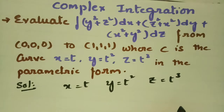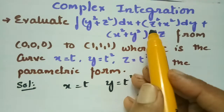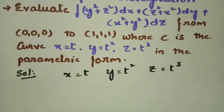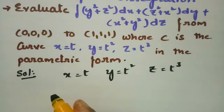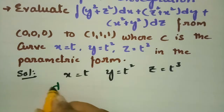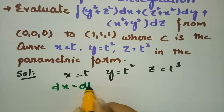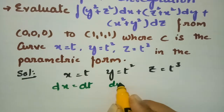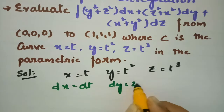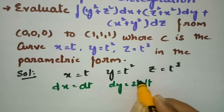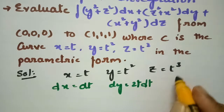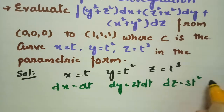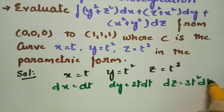Using these curves, we have to solve this integral. So, what will be dx? dx = dt, dy = 2t·dt, and dz = 3t²·dt.